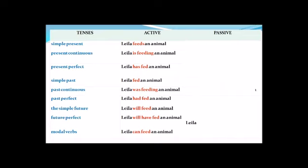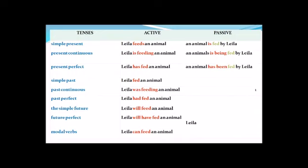Now let's look at other tenses using the same example. Simple present: 'Leila feeds an animal' → 'An animal is fed by Leila.' Present continuous: 'Leila is feeding an animal' → 'An animal is being fed by Leila.' Present perfect: 'Leila has fed an animal' → 'An animal has been fed by Leila.' Simple past: 'Leila fed an animal' → 'An animal was fed by Leila.' Past continuous: 'Layla was feeding an animal' → 'An animal was being fed by Layla.'